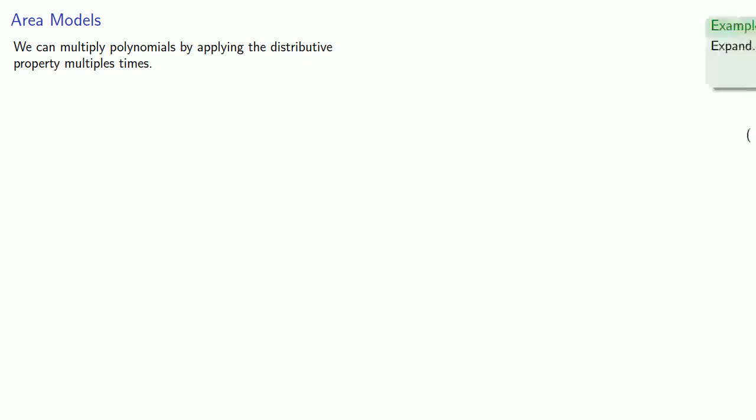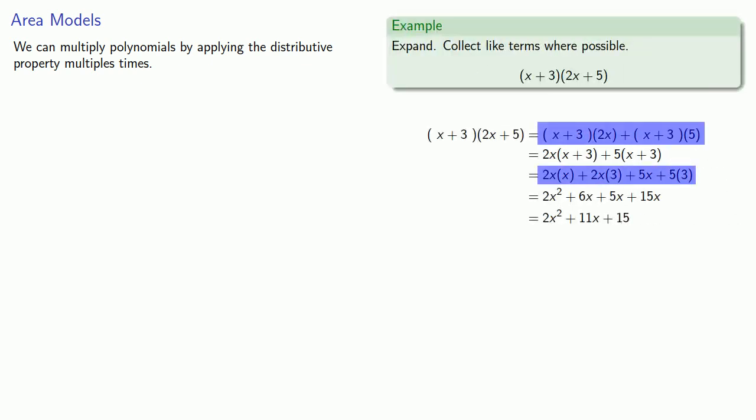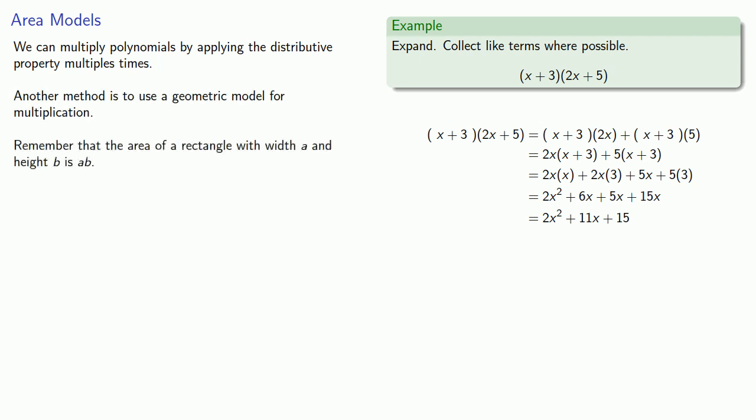So algebraically, when we multiply two polynomials, we apply the distributive property a couple of times. Another way we can multiply is to use a geometric model for multiplication. So remember that the area of a rectangle with a width of a and a height of b is ab.